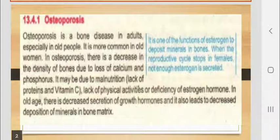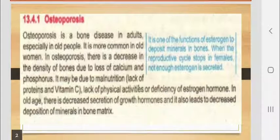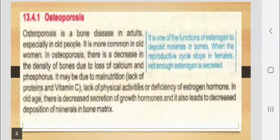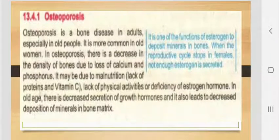Osteoporosis may be caused by lack of protein and vitamin C, lack of physical activities, or deficiency of estrogen hormone. In old age, there is decreased secretion of growth hormone, which also leads to decreased deposition of minerals in bone matrix. It is one of the functions of estrogen to deposit minerals in bone. When the reproductive cycle stops in females, not enough estrogen is secreted, so osteoporosis occurs.